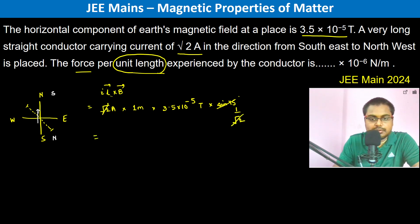Therefore this becomes 35 × 10^-6 newtons per meter, which is 3.5 × 10^-5 newton per meter. So therefore the answer is going to be 35.